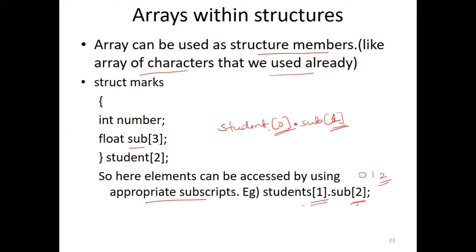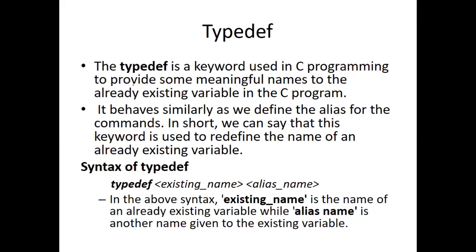Next is typedef. Typedef is a keyword used in C programming to provide meaningful names to already existing data types in the C program. It behaves similarly to defining an alias for commands. In short, this keyword is used to redefine the name of an already existing variable.